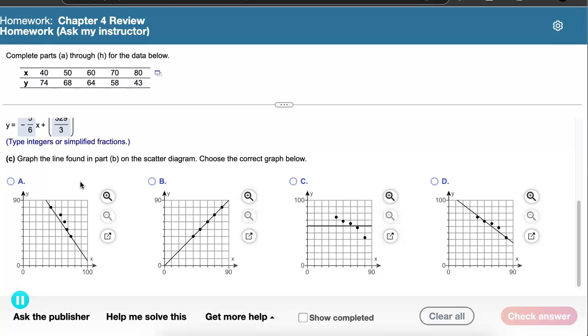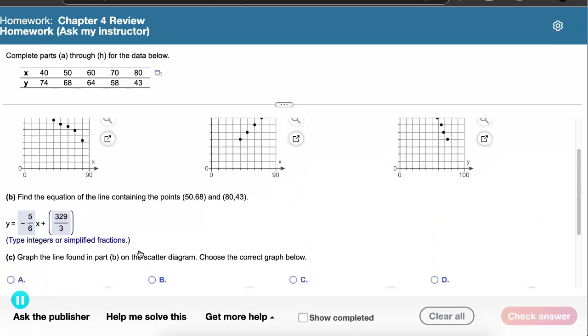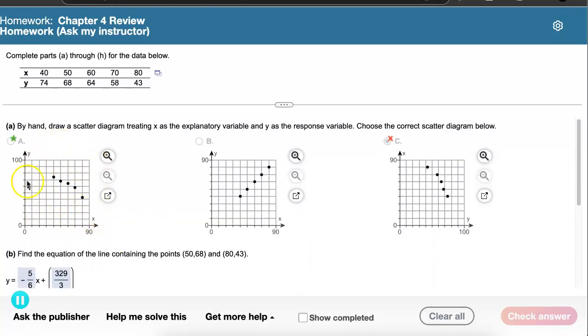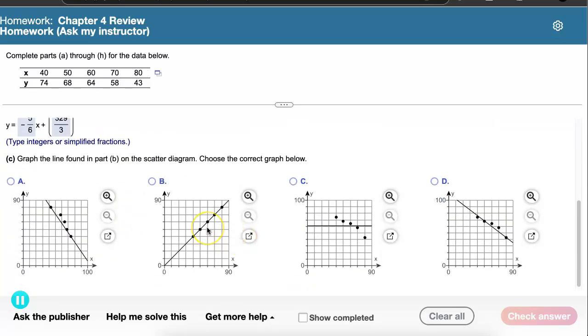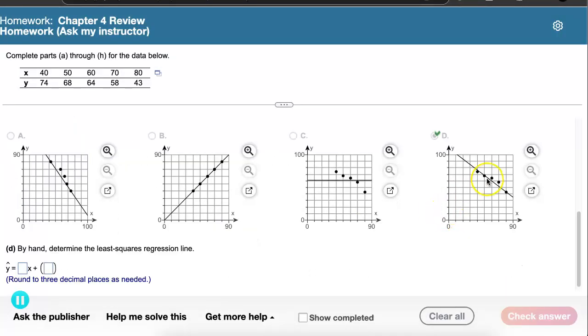Next, we're asked to graph that line that we found here on part b on top of the scatter diagram. And I'm going to use basically a process of elimination here. I have the correct scatter diagram here. Notice that scatter plot had x from 0 to 90, y from 0 to 100. And I see this general picture of what that data looks like. So that tells me I can go ahead and eliminate b as a choice. I also know I can eliminate c as a choice. That doesn't make any sense. We have a slope that's negative. So I'm kind of here between a and d. But if I go back and look at those scales, d is the better choice.